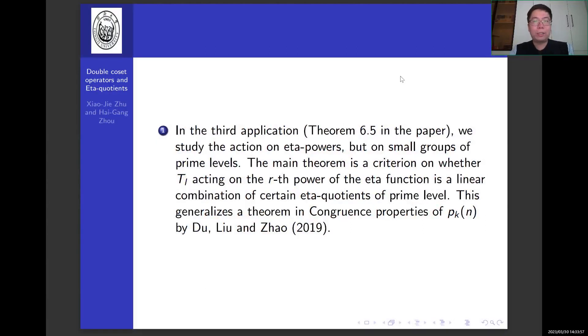In the third application, that is theorem 6.5 in the paper, we study the action on eta powers but on smaller groups of prime levels. The main theorem is a criterion on whether Tl acting on the r-th power of the eta function is a linear combination of certain eta quotients of prime level. This generalizes a theorem in congruence property of pkn by Du, Liu, and Zhao.